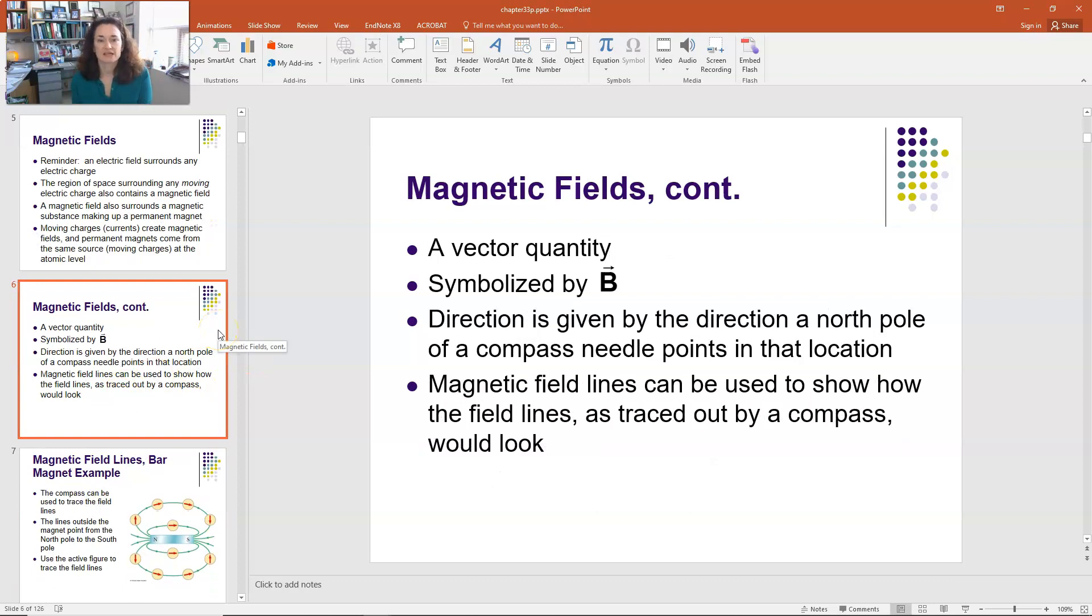Now, let's talk about magnetic fields. We're going to use the symbol B with a vector sign over the top for magnetic fields. Magnetic fields are vectors. They have direction and magnitude. And the direction of the magnetic field is given by the direction that a north pole of a compass needle would point in that location.